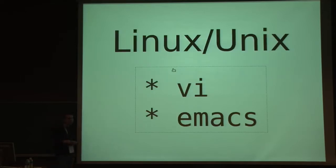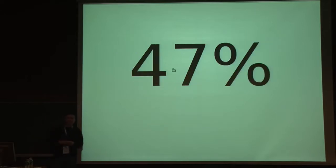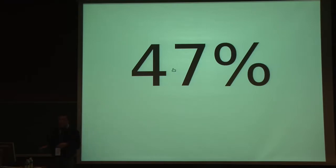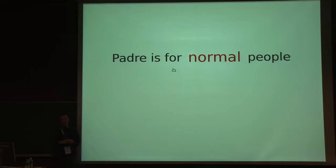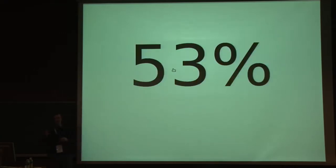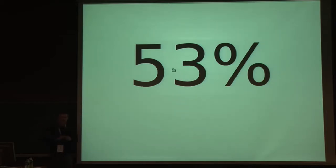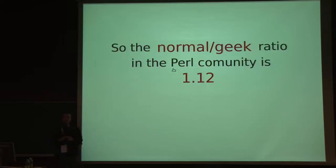Most of the people were actually saying that they are using either VI or Emacs — apparently they were using Linux and Unix. The percentage of answers was 47%, so quite a lot of people are using these two editors. The problem is, of course, that those are only for the geeks. And Padre is not for geeks, really — Padre is for the normal people. So it leaves for us about 53% of the population, which is sort of okay. This little poll also proved something else: we now know that the normal-to-geek ratio in the Perl community is about 1.12.